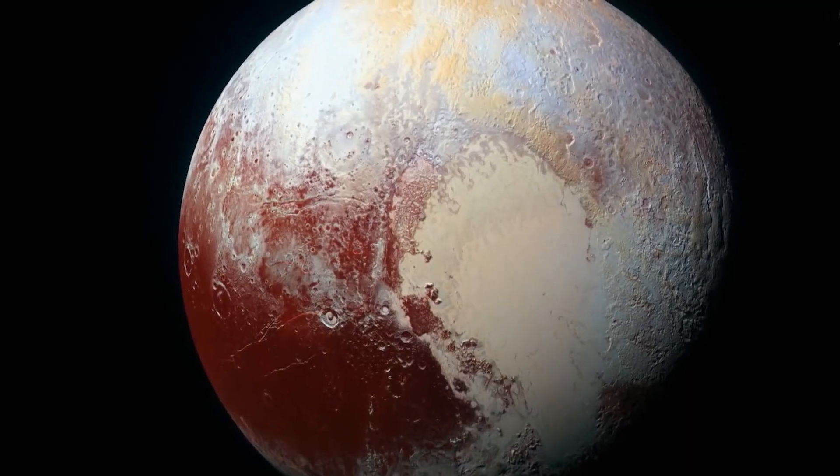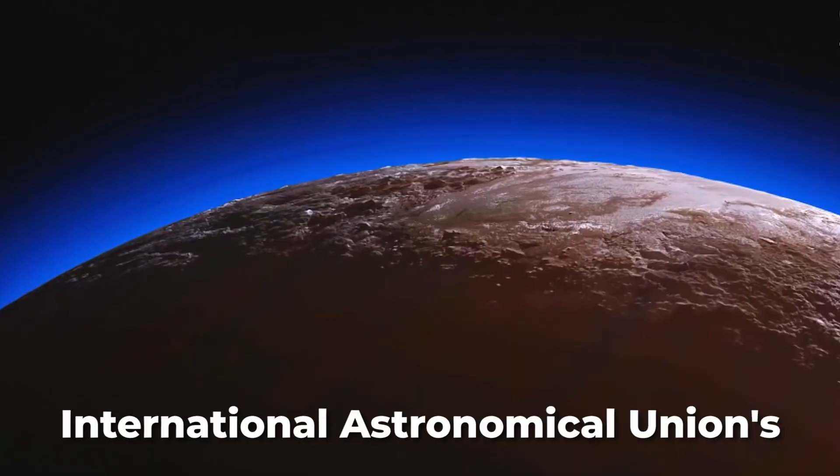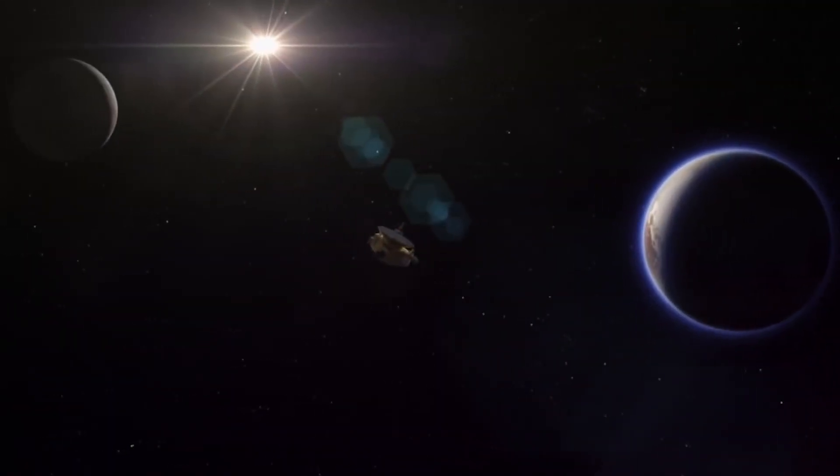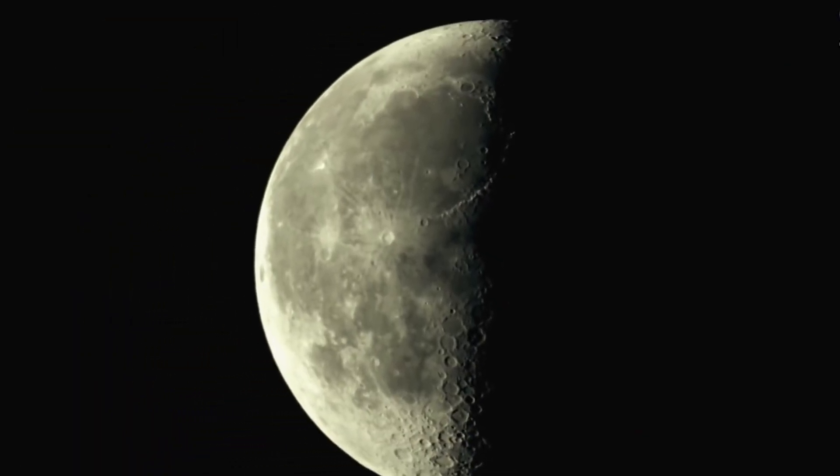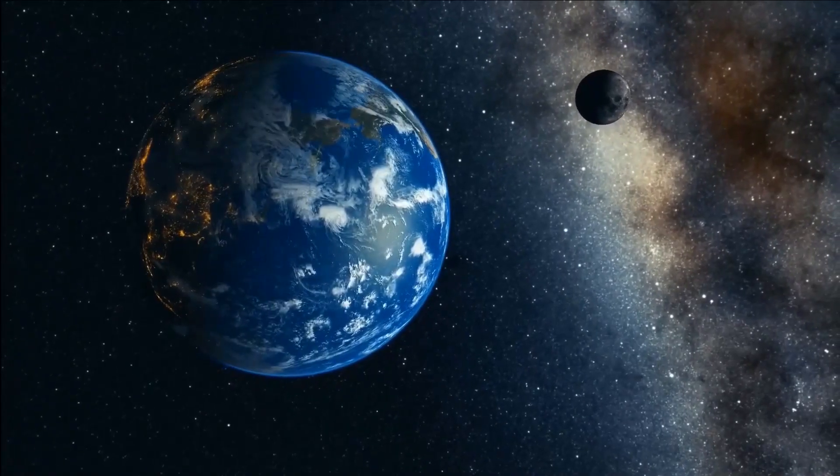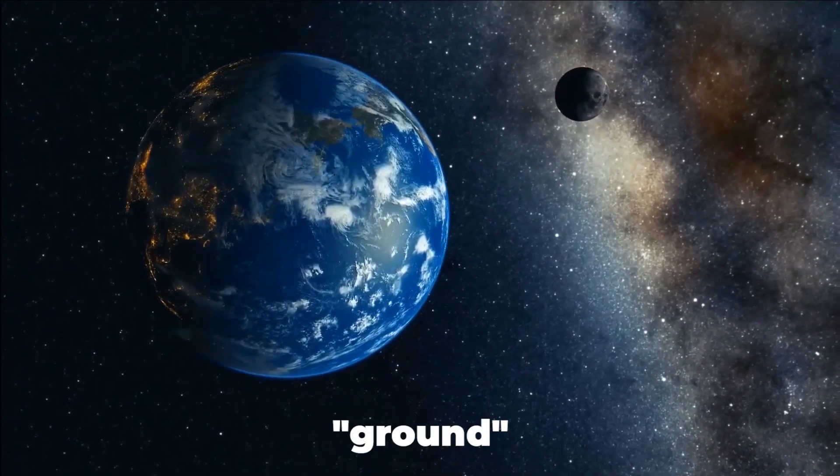Whoever does get to name the planet will need to receive the International Astronomical Union's approval before the name can be used officially. Large planets in our solar system typically have the names of Roman deities. But our home planet, Earth, is an exception, because its name is derived from an Old English term that simply means ground.